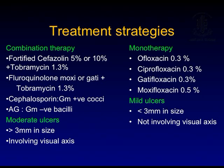Monotherapy has also been advocated using fluoroquinolones — oflox, ciproflox, gatiflox, or moxiflox. To summarize: in mild ulcers less than 3 mm in size not involving the visual axis, monotherapy can be started. For moderate to severe ulcers involving the visual axis, combination therapy is preferred. One must always keep in mind what the patient has already taken, so as not to start the same drugs again.